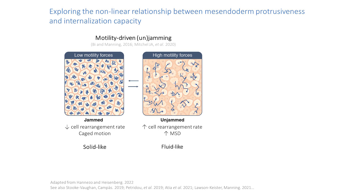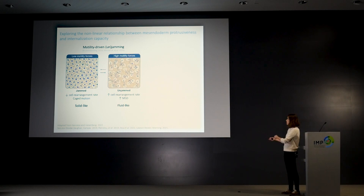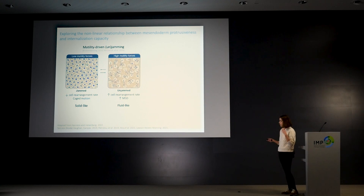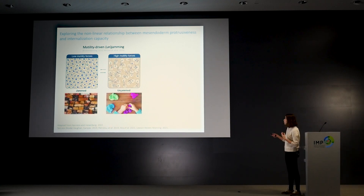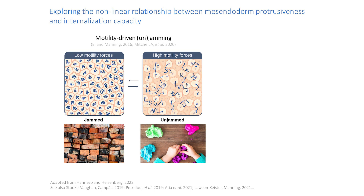On the other hand, if motility forces are low, it's very hard to drive rearrangements — cells don't exchange position with neighbors and remain in cage motion, always staying in the same position. This is akin to solid-like behavior. An intuitive analogy: being jammed is like being in a brick wall, barely able to displace; being in an unjammed state is more like playing dough — very easy to change shape.